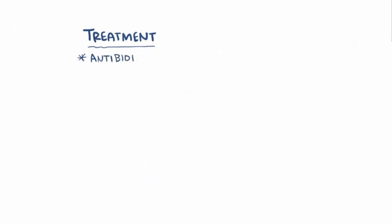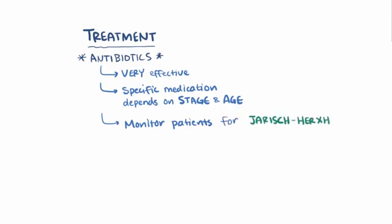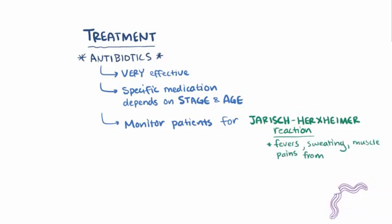To treat Lyme disease, antibiotics are the first-line choice of treatment, and if given early in the disease, are very effective at wiping out the bacteria, although the specific antibiotic given often depends on the stage of the disease and the age of the patient. It's also important to monitor patients being treated with antibiotics because they can develop a Jarisch-Herxheimer reaction, where they develop fevers, sweating, and muscle pains in response to spirochetes breaking open and releasing a lot of antigens all at once, which is highly immunogenic.